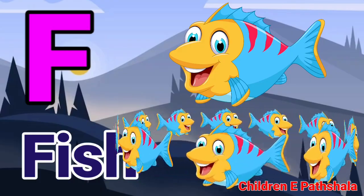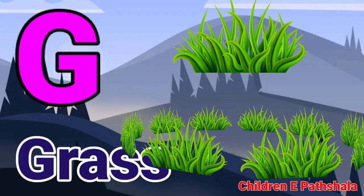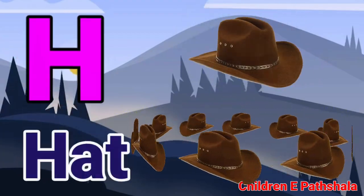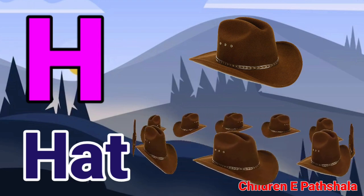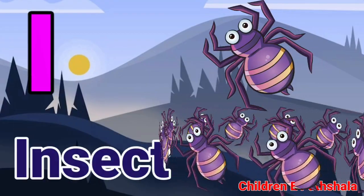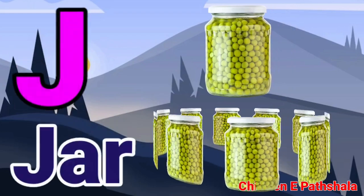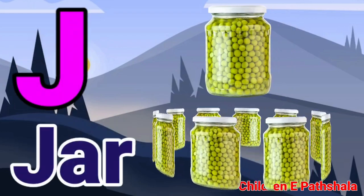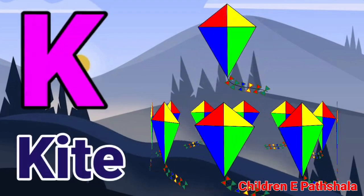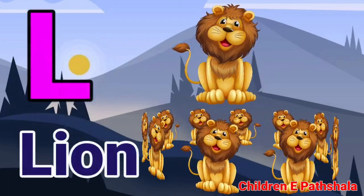G for Grass, H for Hat, I for Insect, J for Jar, K for Kite, L for Lion.